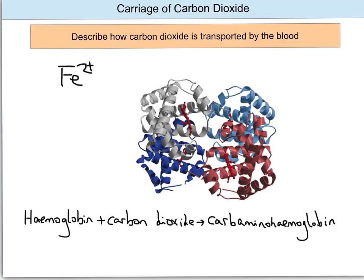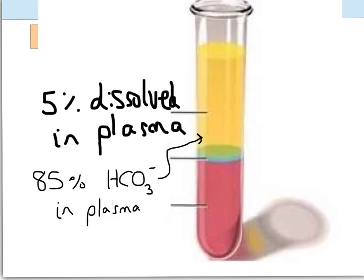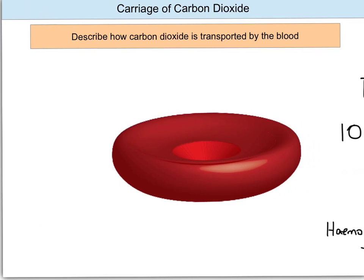10% of the total carbon dioxide carried by the blood is carried in this form, carbaminohaemoglobin. So you've got 5% carried by dissolving directly in the plasma, 10% carried by binding to haemoglobin to form carbaminohaemoglobin. And the final 85% is actually also carried in the plasma in the form of hydrogen carbonate ions. These hydrogen carbonate ions are actually formed, originally, inside red blood cells, before they diffuse into the plasma.